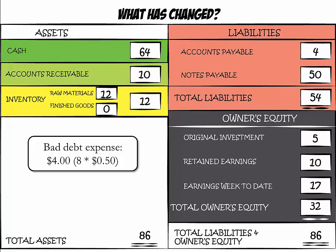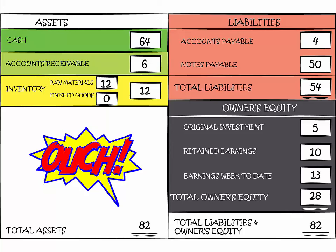This brings the balance sheet back in balance. Accounts receivable was reduced from $10 to $6 and earnings week to date was reduced from $17 to $13. The totals of the balance sheet columns were both reduced to $82 from $86.